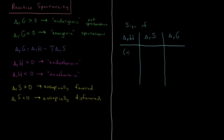If delta H of reaction is negative — it's exothermic — and if delta S of reaction is positive — it's entropically favored — then it's favored by both, and thus delta G is going to be negative. This reaction will be spontaneous and exergonic, and it will be spontaneous in the forward direction at all temperatures.